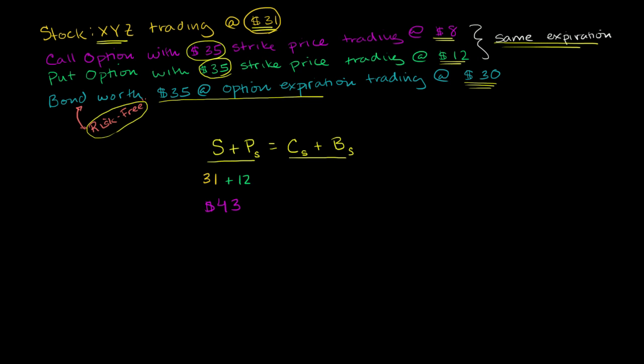On the right-hand side, you have the call option trading at $8, and the bond trading at $30. So this combination is trading at $38.